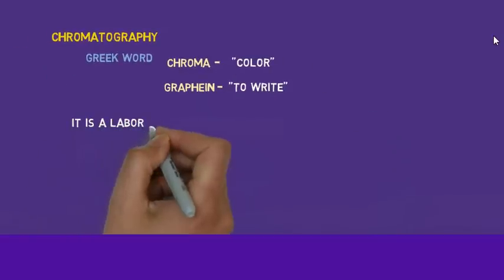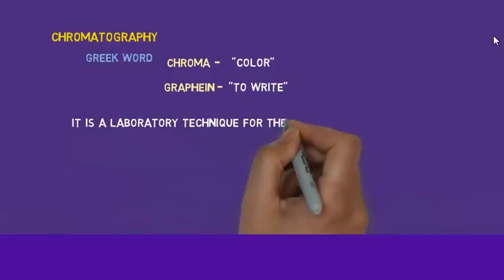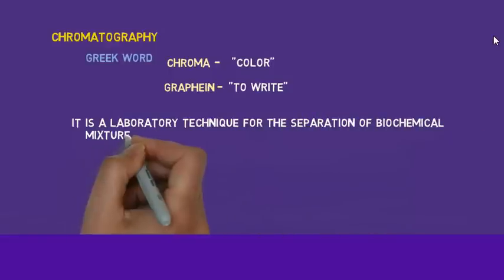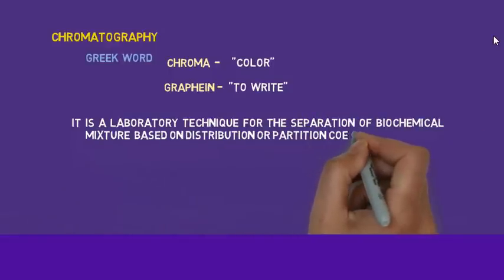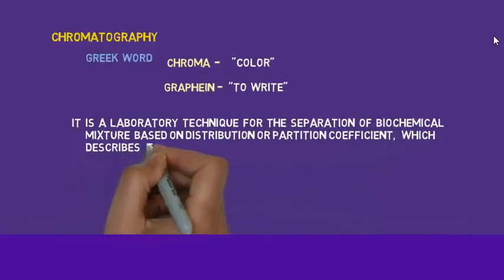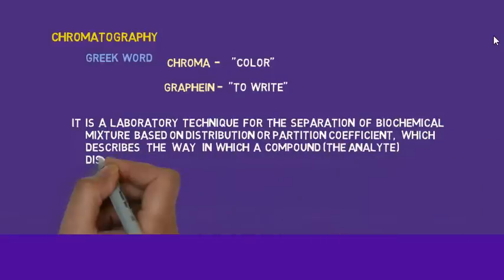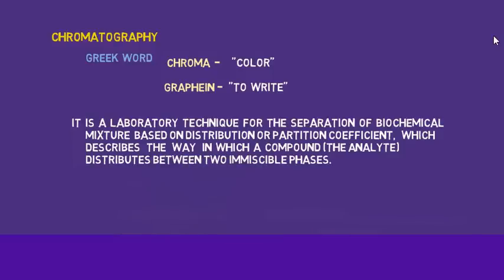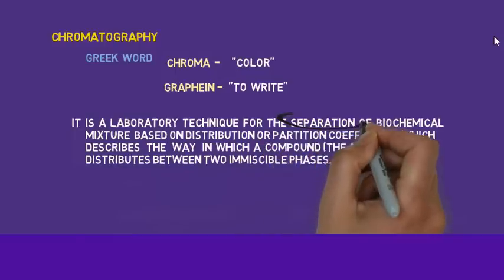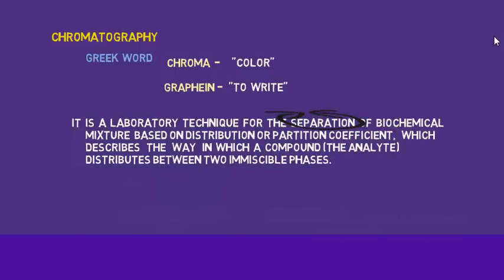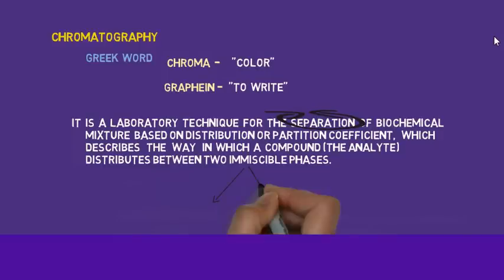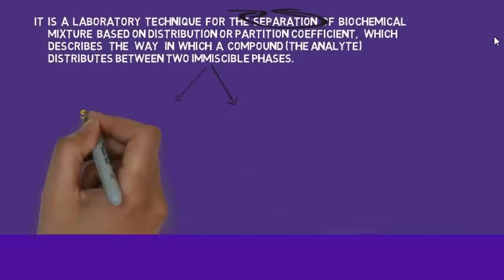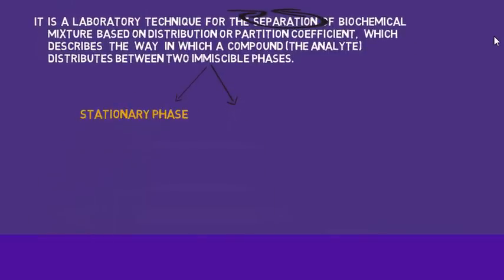Chromatography is a laboratory technique for the separation of biochemical mixtures based on the distribution or partition coefficient, which describes the way in which a compound — the analyte — distributes between two immiscible phases. It is mainly a separation-based technique that distributes a mixture of biochemical compounds into two phases: the stationary phase and the mobile phase.